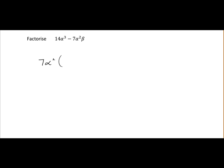What we've done is we've taken 7 alpha squared outside the brackets. So we divide each term by 7 alpha squared. 14 alpha cubed divided by 7 alpha squared: 14 divided by 7 is 2, alpha cubed divided by alpha squared is alpha. 7 divided by 7 is 1, alpha squared divided by alpha squared is 1, and we're just left with beta. So it's 1 by 1 by beta which is just beta. And that's our expression factorized.